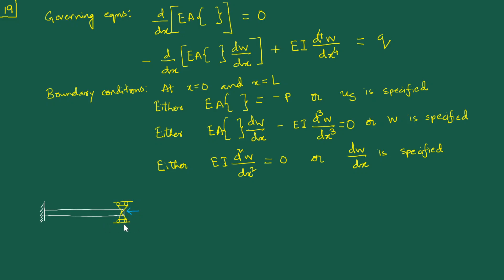We can also have another situation where perhaps the rod is clamped, but the end where it is clamped is itself on some kind of platform that is free to move. The important thing to note — and of course you'll have the load P also here — is that the us variable must be such that it is not specified.